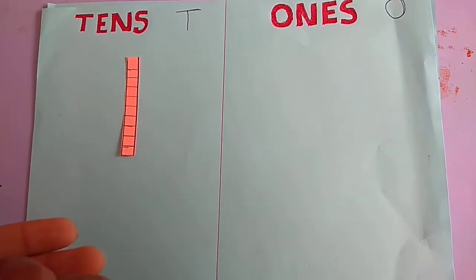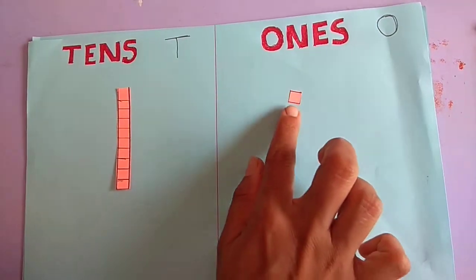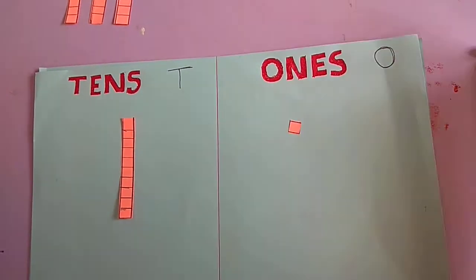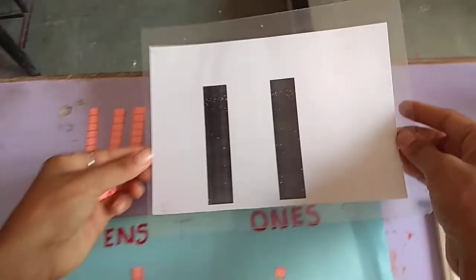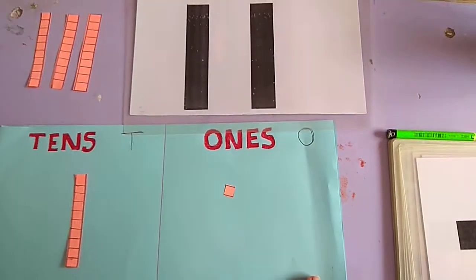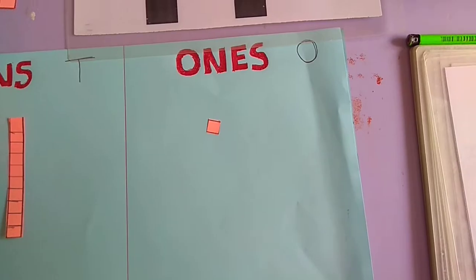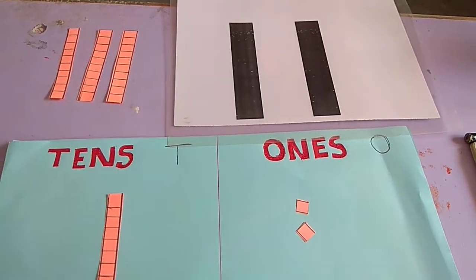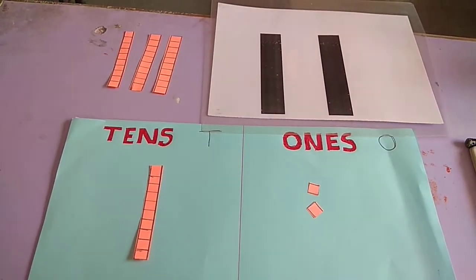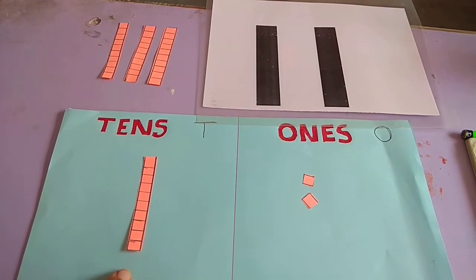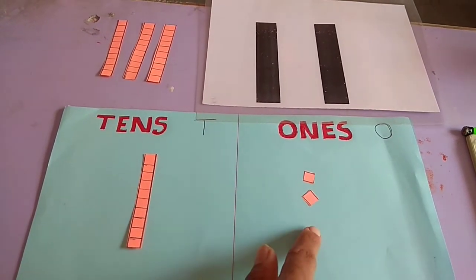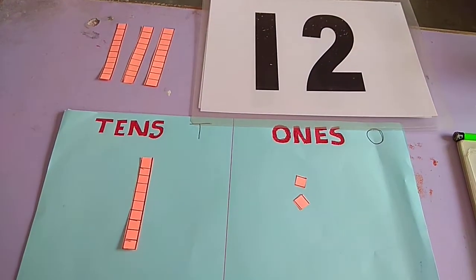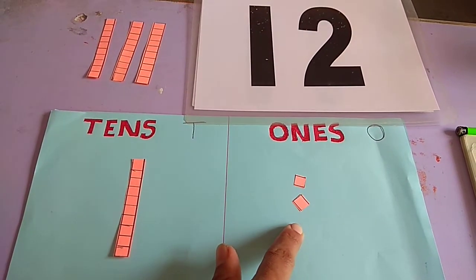If we put here only 1 one, that is 1 ten and 1 one — that becomes 11. इस बन जाएगा 11. Now, if I put 1 more one in the 1s place, then it becomes 1 ten and 2 ones — that is 12. Yes, that is 12. 1 ten and 2 ones.